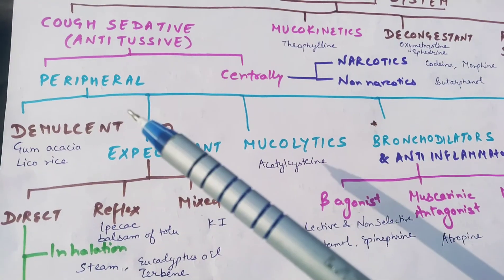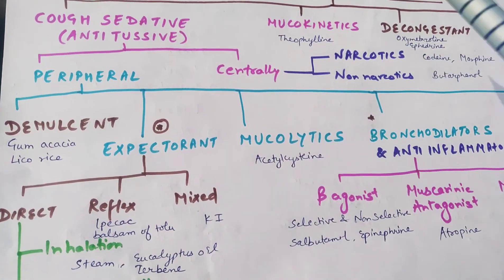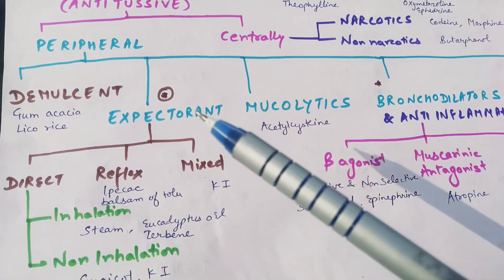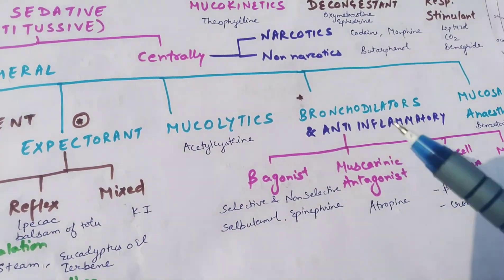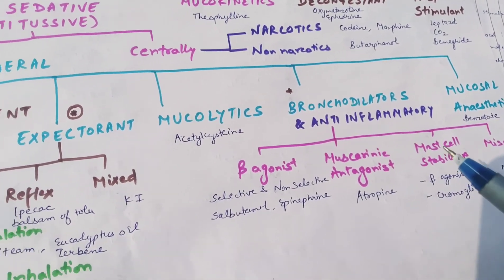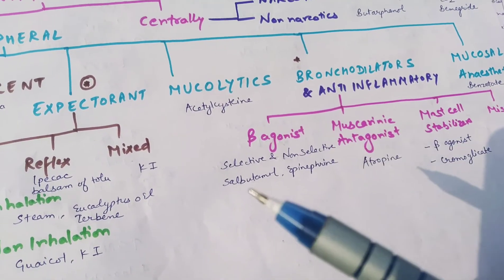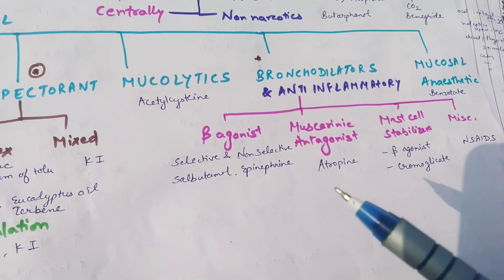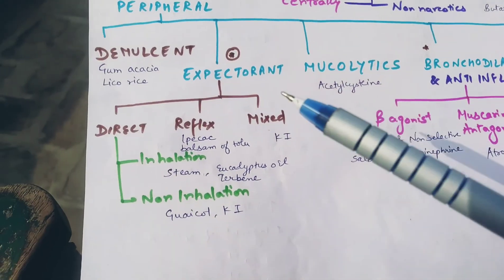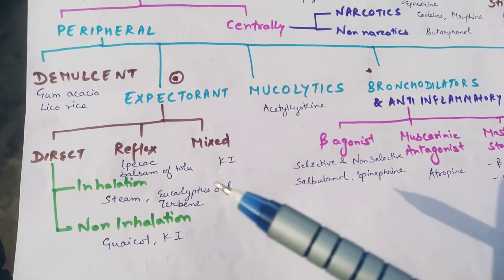To summarize, the respiratory system drugs divide into: cough sedatives, mucokinetics, decongestants, respiratory stimulants, and antitussives — peripherally acting and centrally acting. Centrally: narcotics and non-narcotics. Peripherally: demulcents, expectorants, mucolytics, bronchodilators and anti-inflammatory, and mucosal anesthetics. Under bronchodilators: beta agonists, muscarinic antagonists, mast cell stabilizers, and miscellaneous. Expectorants may be direct, reflex, or mixed.